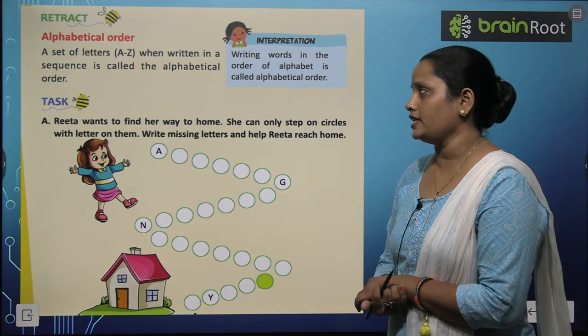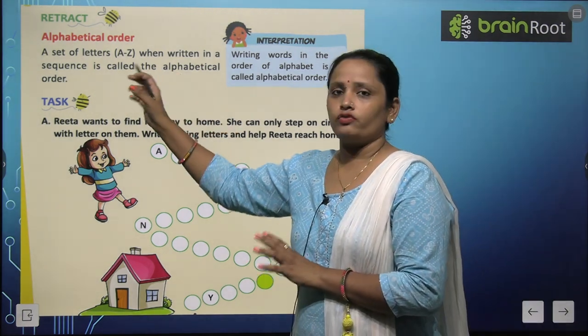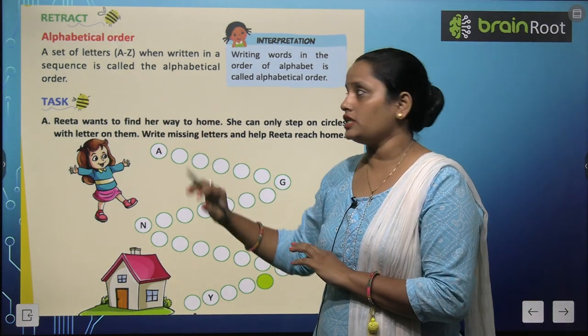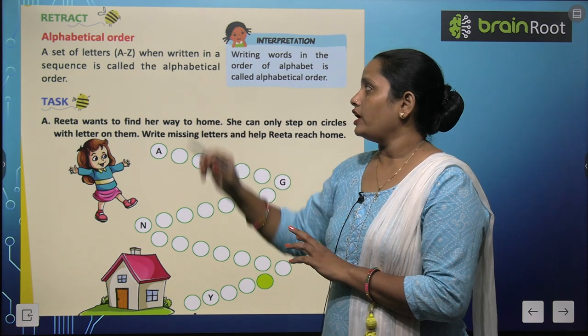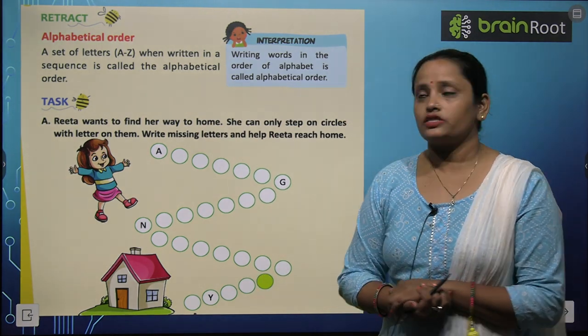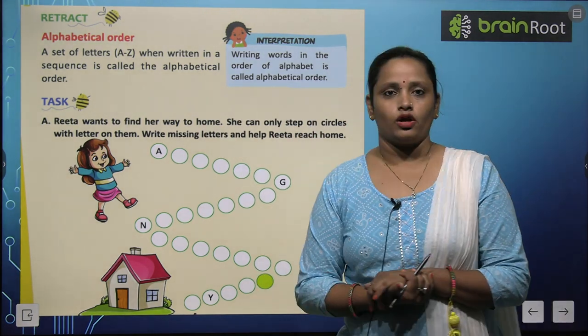What is it? Let's see. A set of letters A to Z when written in a sequence is called alphabetical order.